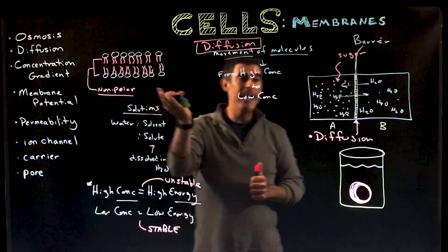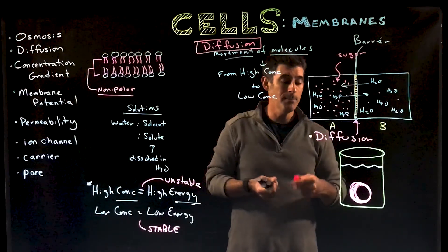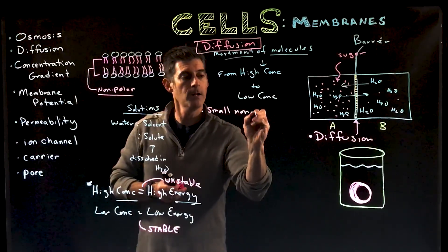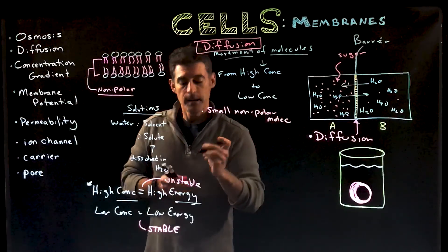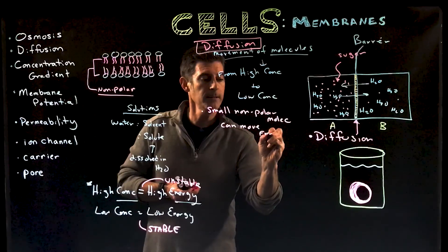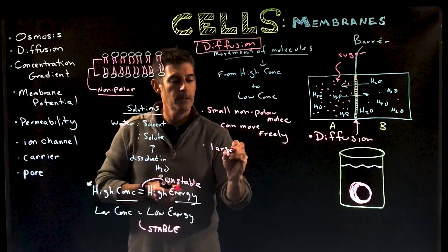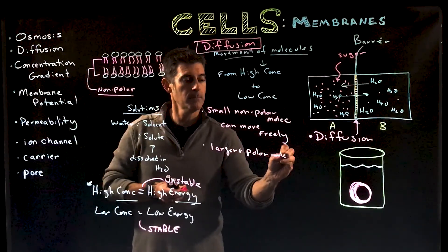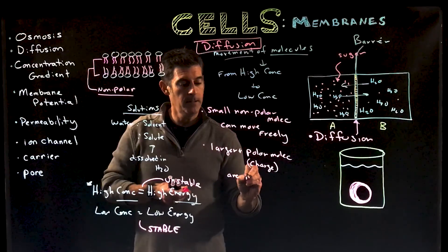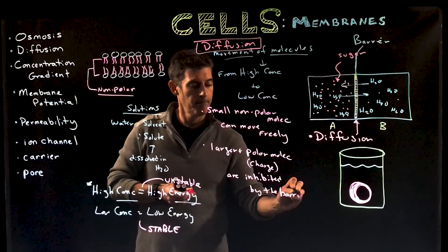If those molecules can move across the membrane, they will — right between the phospholipid bilayers. Certain molecules can and certain molecules cannot. Small, nonpolar molecules, like gases, can move freely from one side of the membrane to the other. Larger and polar molecules, and charged molecules, are inhibited by the barrier — the membrane itself blocks them from moving from one side to the other.